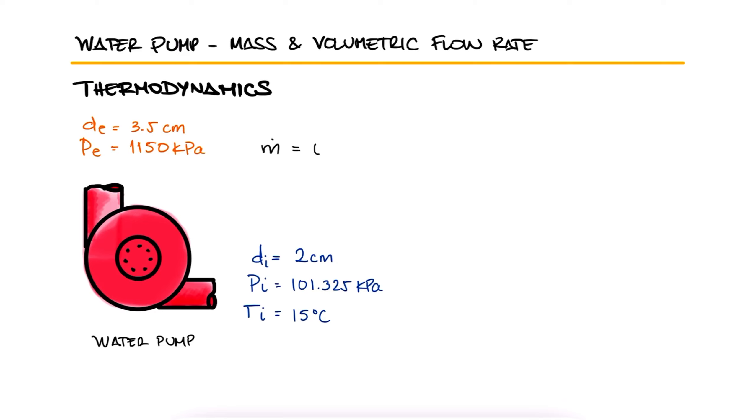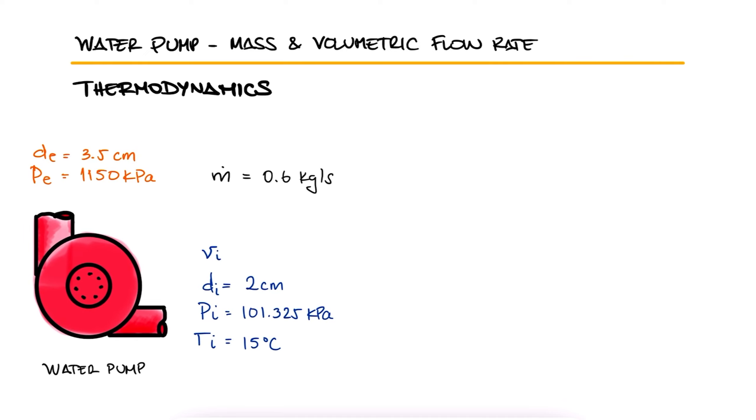If the mass flow rate through the pump is 0.6 kilograms per second, what is the velocity of the water at the inlet and at the outlet? Do these velocities change significantly if the inlet temperature is raised to 40 degrees Celsius?